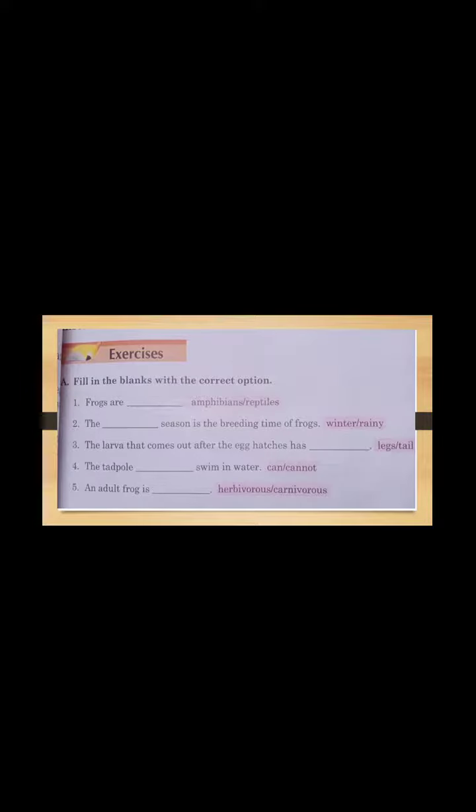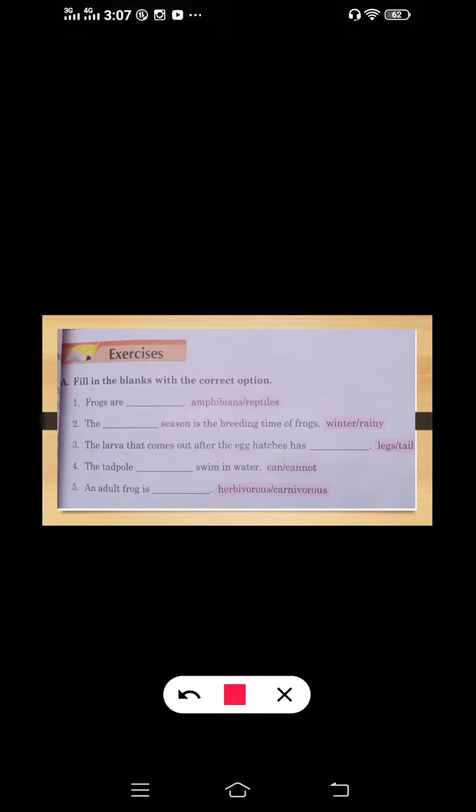First of all, we will solve Exercise A: Fill in the blanks with the correct option. The first one is: Frogs are [blank]. Answer is amphibians. Second one is: The [blank] season is a breeding time of frogs. The answer is rainy.